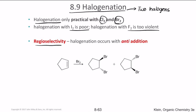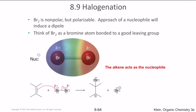Halogenation is regioselective — it undergoes anti-addition reaction. Anti-addition means one group adds on top and one on the bottom. This is how the addition occurs, and you end up getting two different isomers from the structure. When you take bromine, bromine is a non-polar structure but it is also polarizable when a nucleophile approaches. As the nucleophile approaches, positive charge accumulates towards one side and negative charge accumulates on the other side.